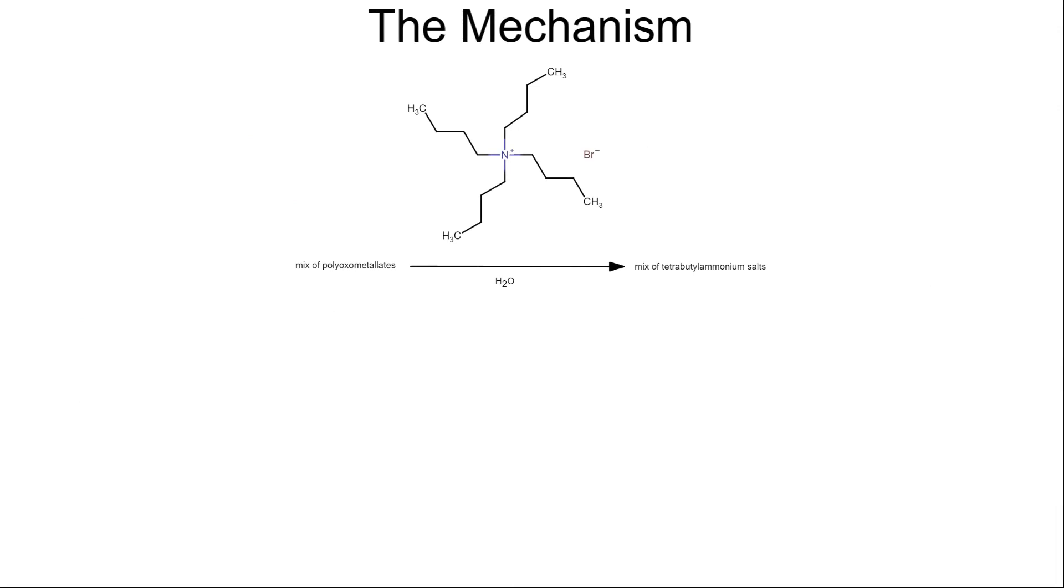When the tetrabutyl ammonium bromide solution is added, it shifts out any other cations, forming a mixture of tetrabutyl ammonium polyoxometalates. The major one formed, however, is a water-insoluble white precipitate of tetrabutyl ammonium octamolybdate.